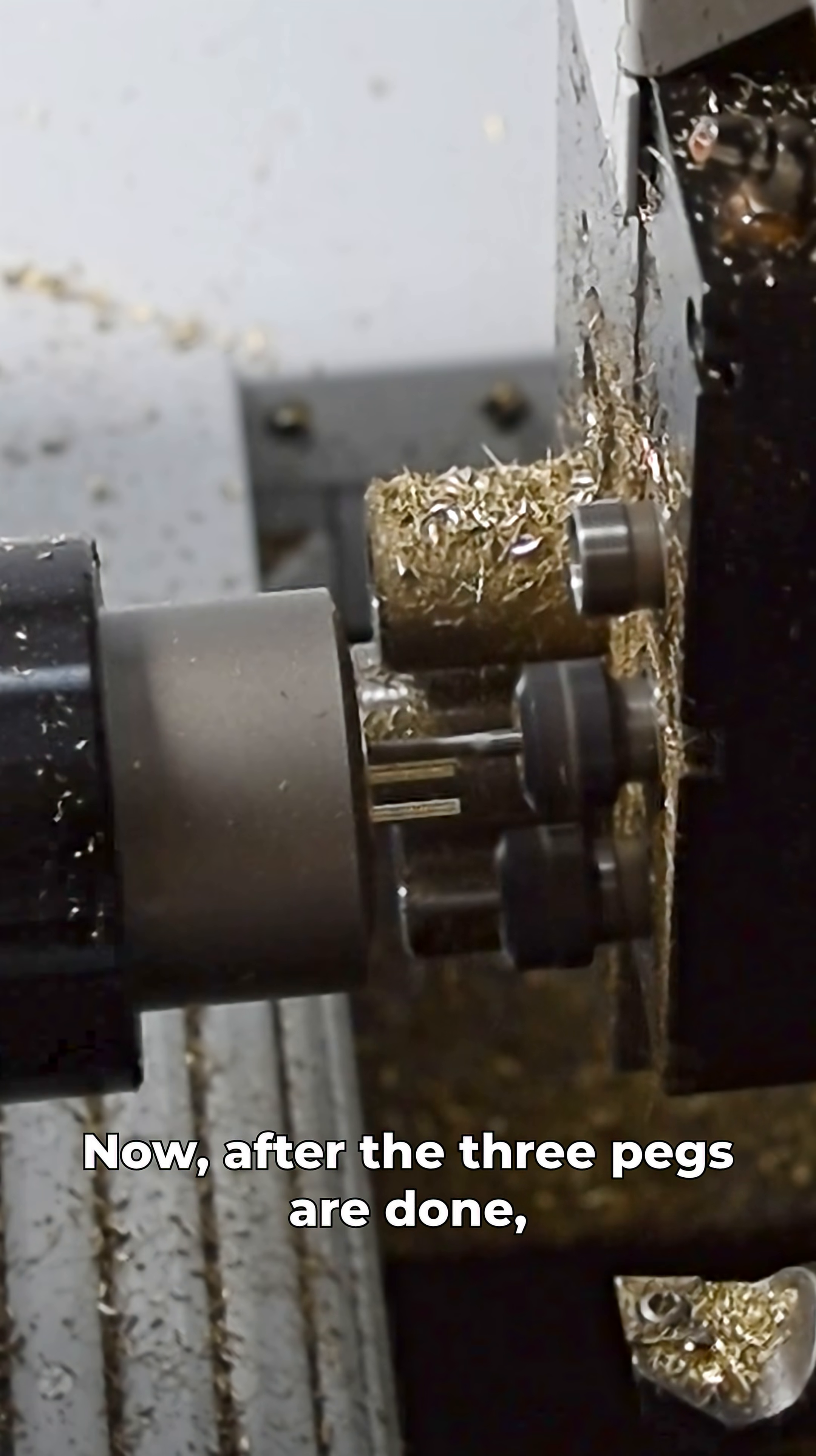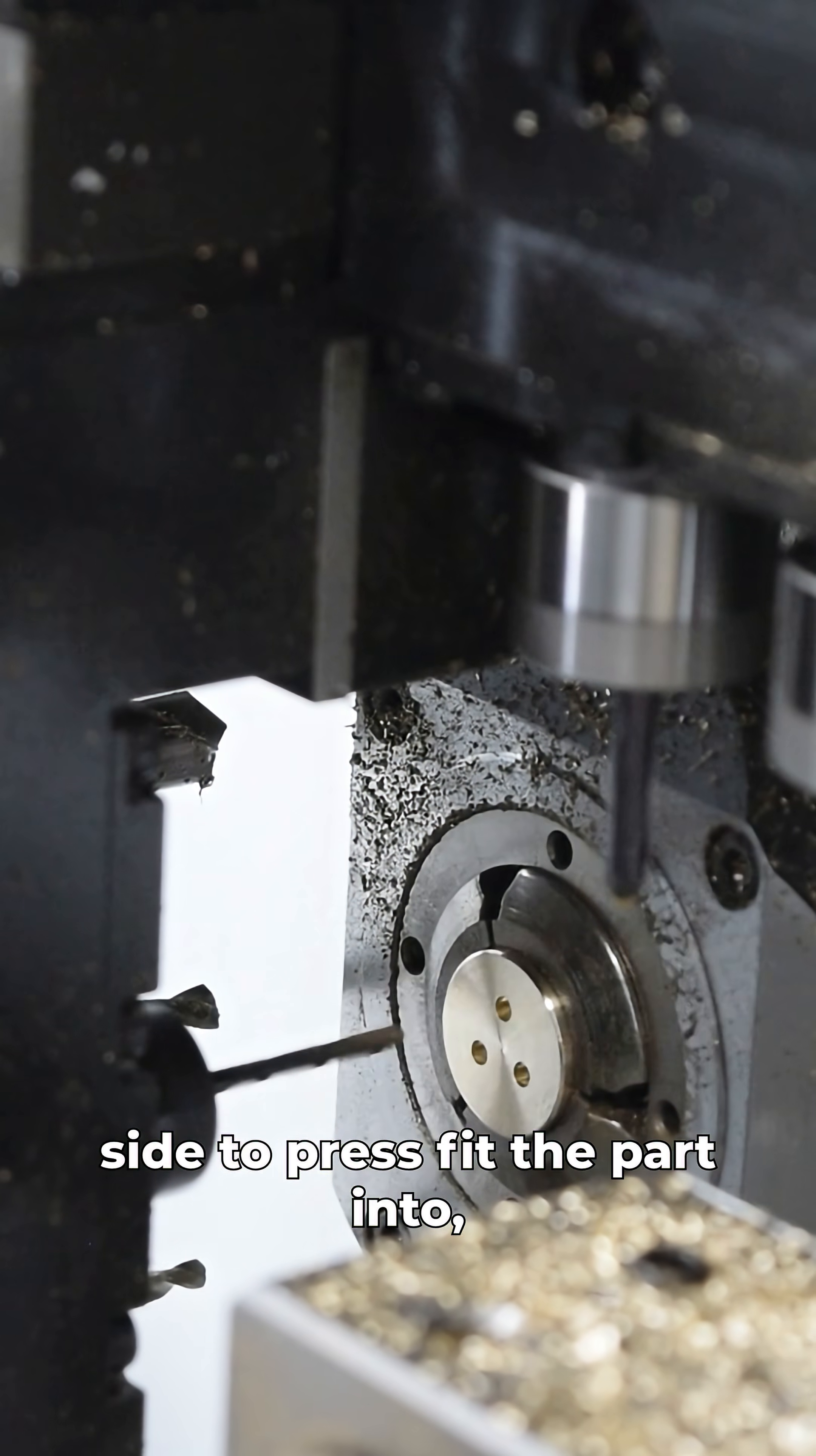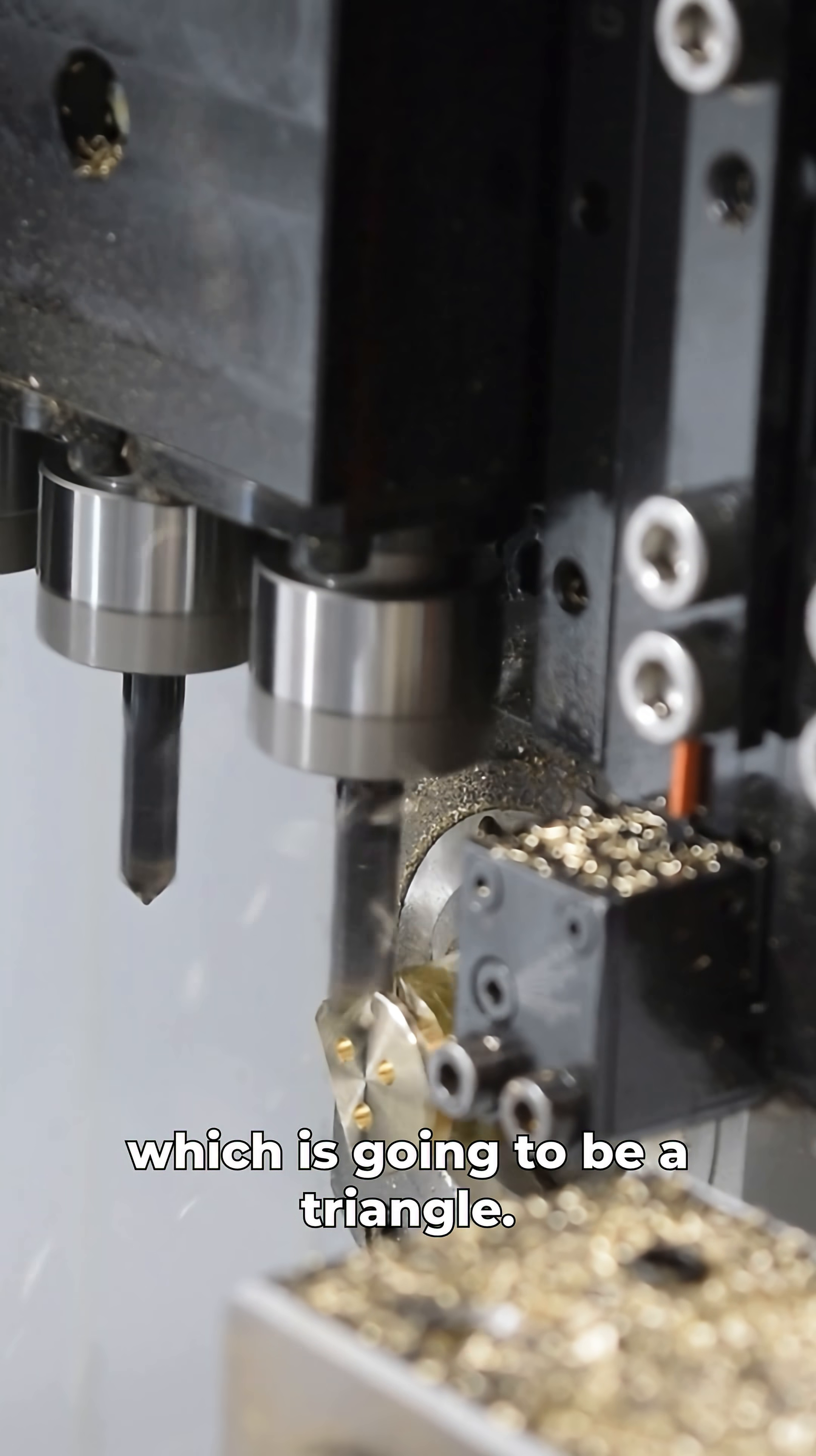Now after the three pegs are done, we drill three holes in our main spindle side to press fit the part into, and then I'm going to mill my first shape which is going to be a triangle.